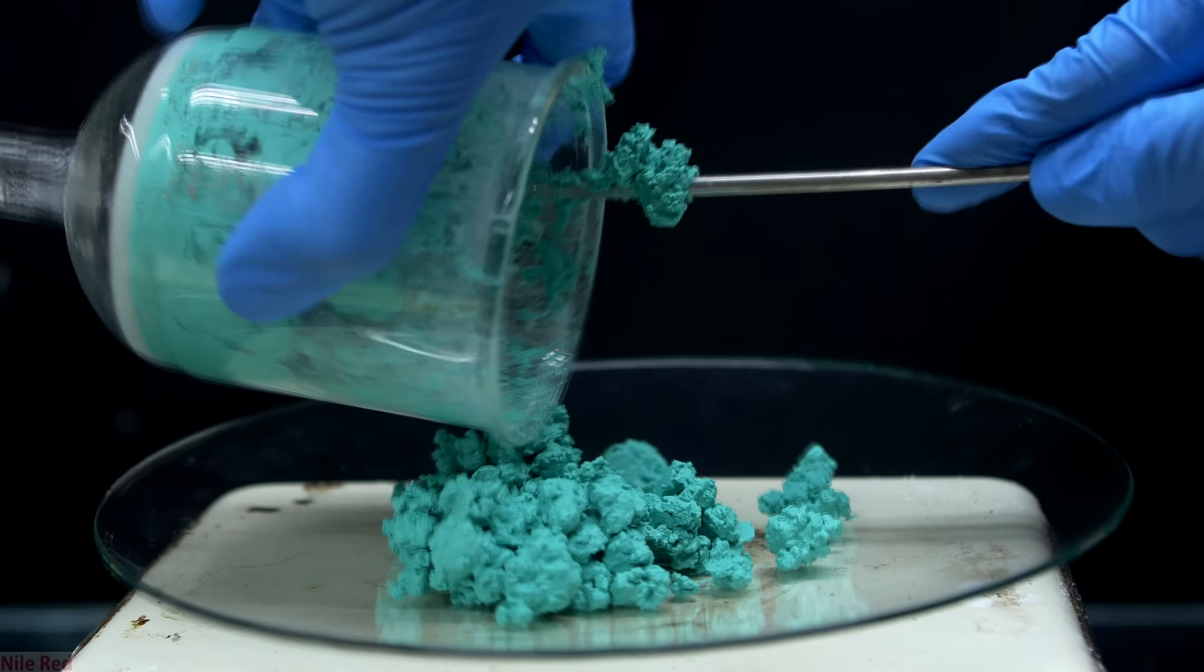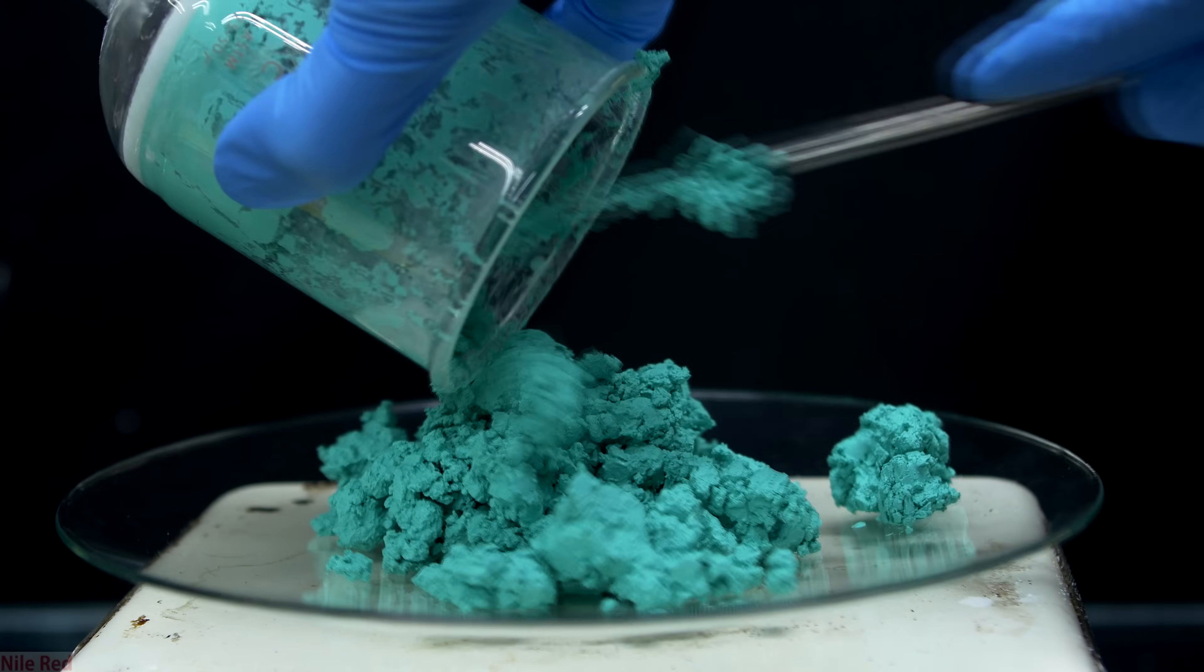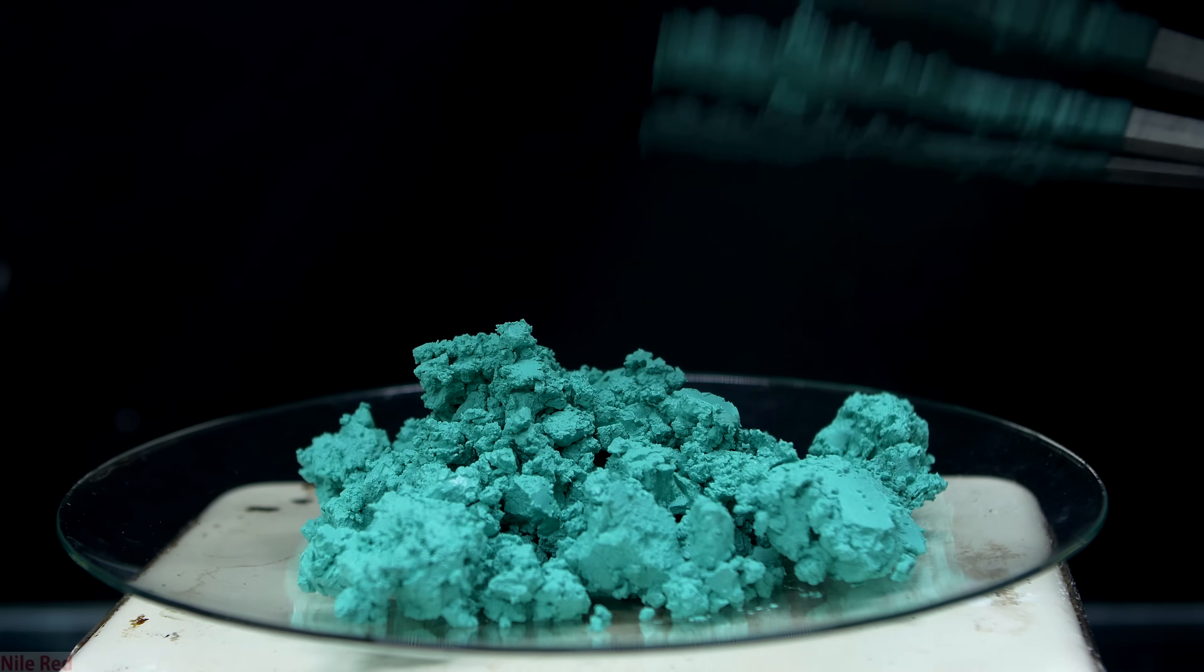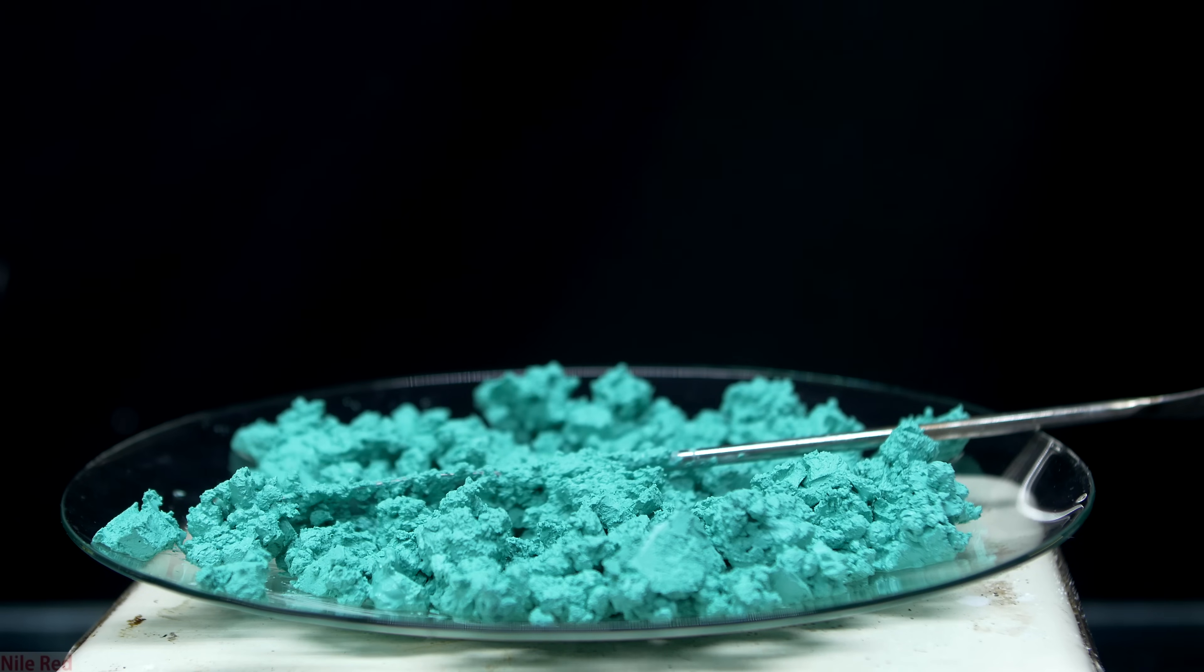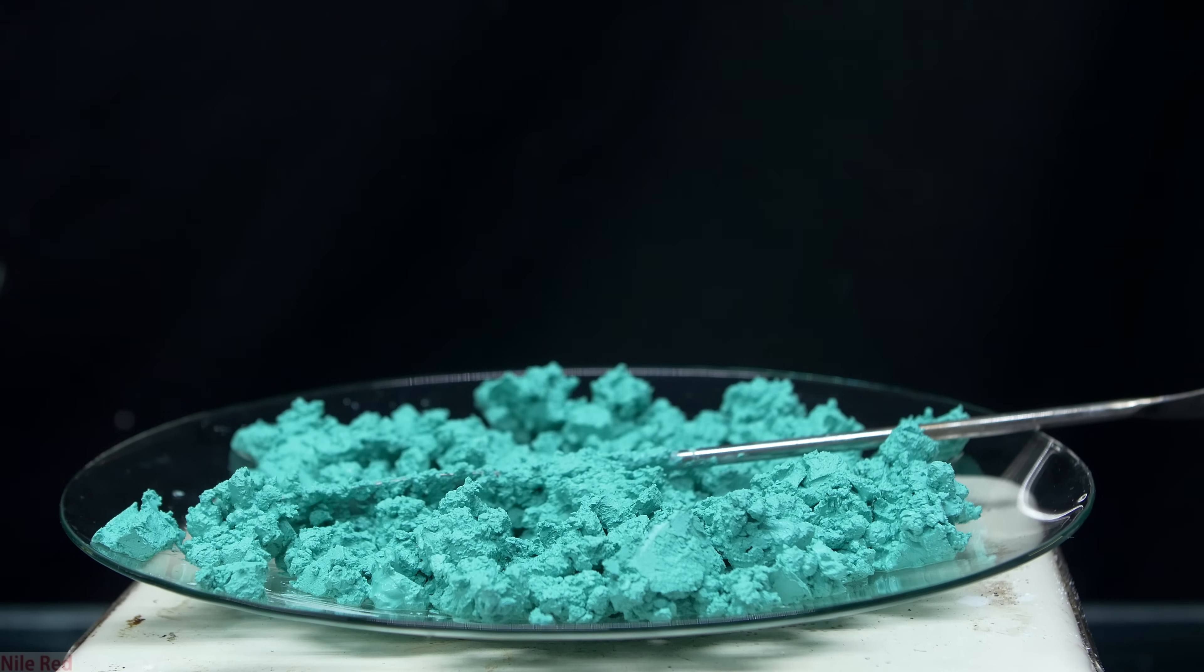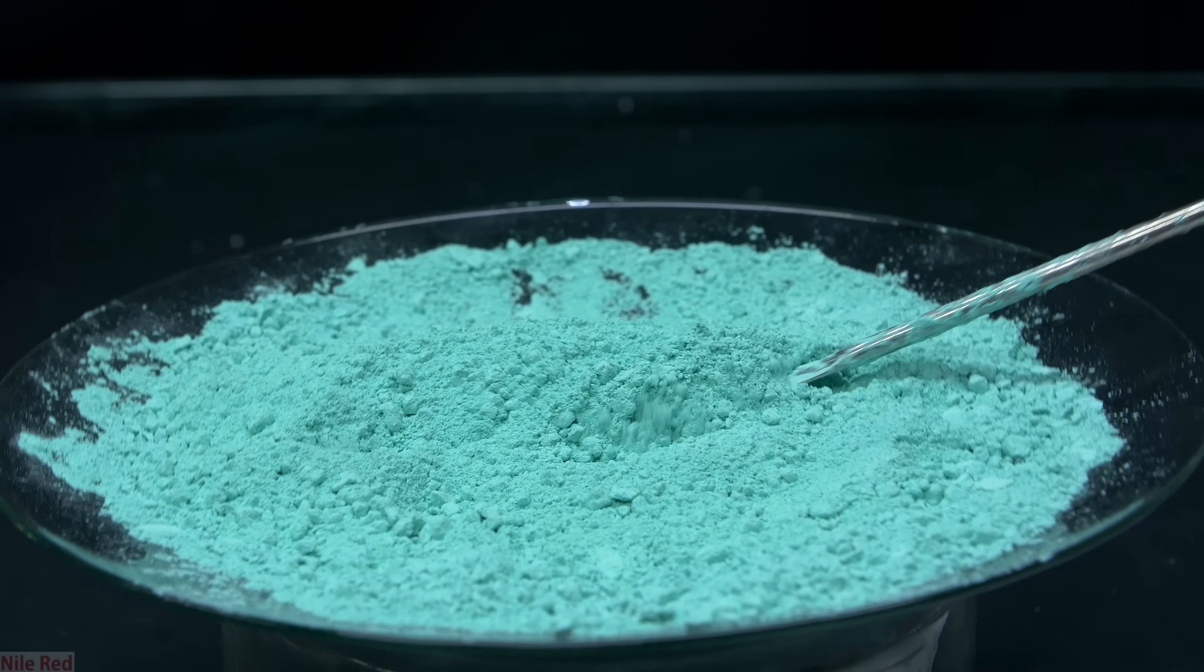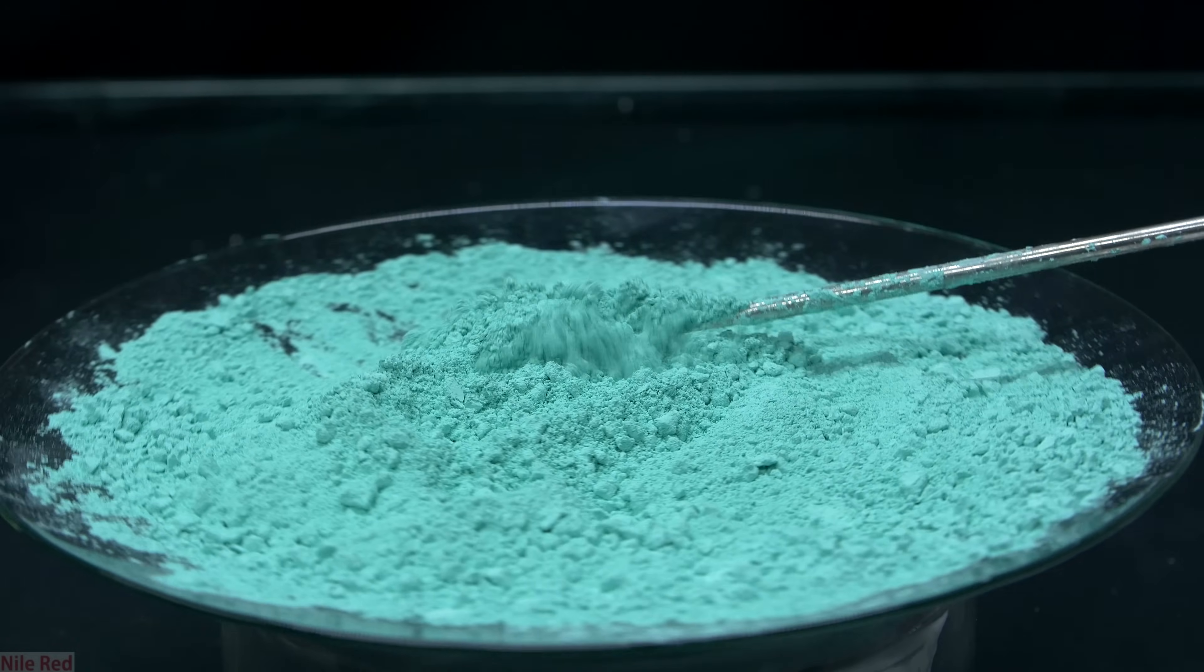I scrape the copper carbonate out of the filter funnel and onto a watch glass. I do my best to remove as much as possible, but there's inevitably going to be a little bit that's left behind. Once I've transferred as much as I can to the watch glass, I use the metal spatula to chop up the big pieces and spread it out. I more or less leave it like this with occasional mixing to let it air dry and get rid of as much water as possible. Just after a few days, it was dry enough that I was easily able to powderize it using the back of the spatula, and I was left with a relatively fine powder.